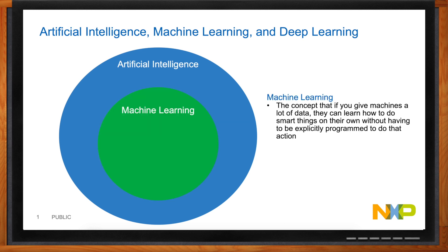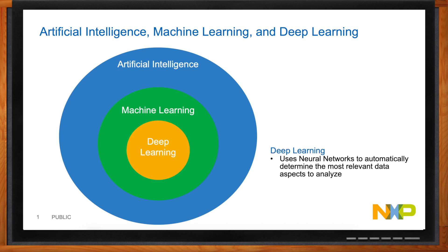Machine learning is the concept that if you give machines a lot of data, they can learn how to do smart things on their own without being explicitly programmed. If you think about recognizing a picture of a cat, it's very hard to write a specific program for that — but if you give it lots of pictures of cats, you can teach it. Deep learning is a further subset that uses neural networks to automatically determine the most relevant data aspects, using layers that feed into other layers until you get an output.